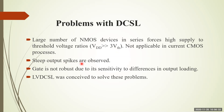Steep spikes have been observed at the outputs, which is another disadvantage. The gate is not robust due to sensitivity to differences in output loadings — since both true and complementary outputs are used simultaneously, trade-offs degrade performance and speed. To solve this, low-voltage DCSL technology is used, though that is beyond the current syllabus.